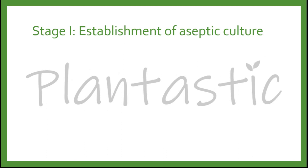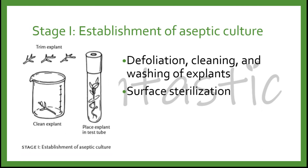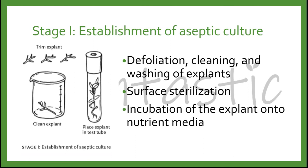In Stage 1, establishment of aseptic culture, we have to perform some cleaning processes prior to surface sterilization, which are defoliation — the removal of leaves — and cleaning and washing of the explant to rinse off the dirt. Surface sterilization involves different surfactants such as ethanol at 70% to 80%, and chemicals that contain sodium hypochlorite. Although mercury chloride is commonly used and found in some articles, it is highly dangerous if not handled properly. After sterilization, the explant is incubated onto sterile nutrient media sterilized through autoclave, at 25 degrees Celsius with a 16-hour photoperiod.